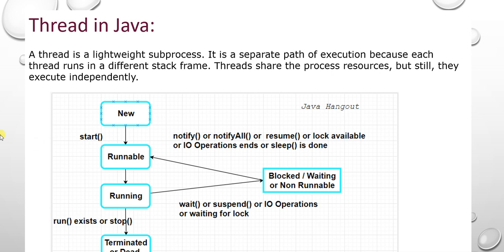The next stage is running stage. Once the run method is complete, it will go to terminated or dead state. These are the life cycle states of a thread. Now we will go to how to create threads.